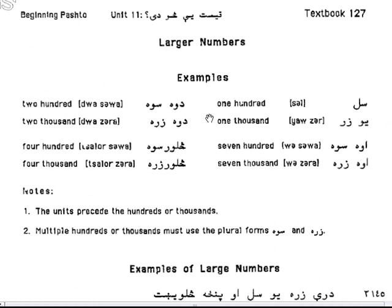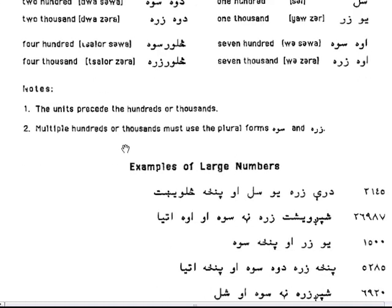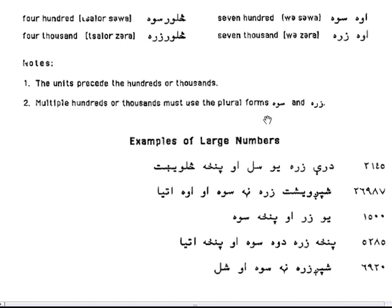Large numbers: Sal is 100, Yawzar is 1000. Uwa-Saw means 700, Uwa-Saw means 7000, Dwa-Saw means 200, Dwa-Zar means 2000, Salor-Saw means 400, Salor-Zara means 4000. The units precede the hundreds or thousands. Multiple hundreds or thousands must use the plural forms Sawa and Zara, which indicate the plural.